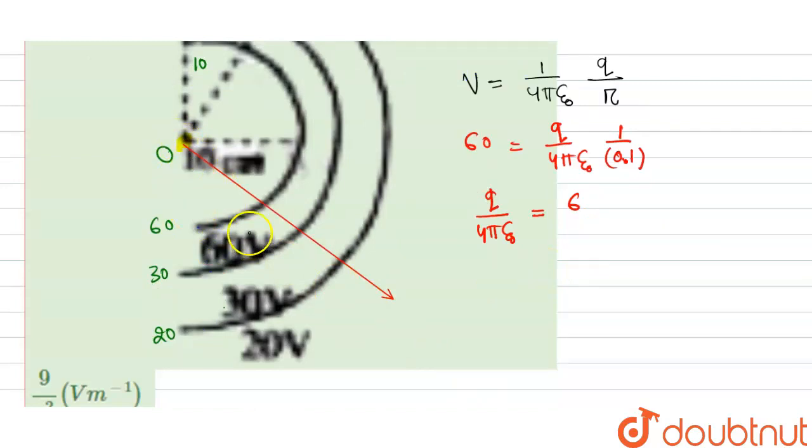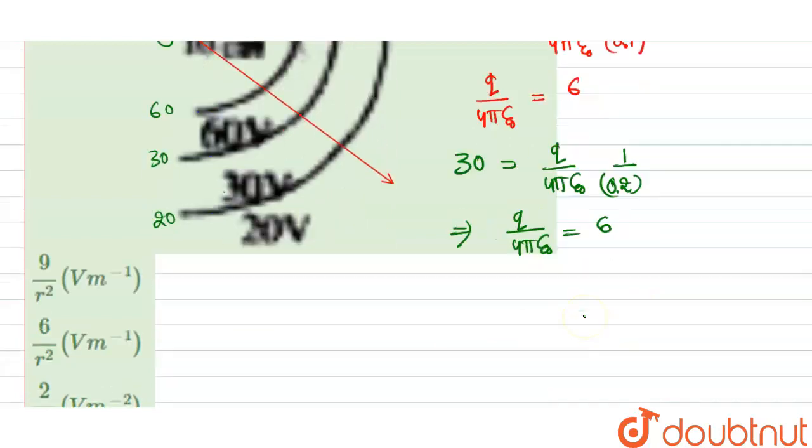Now considering the second circle, what you can get, that is the potential here is 30. This is 30 equal to similarly q divided by 4πε into 1 by, that is distance is here 20 centimeter, that is 20 centimeter we can take it 0.2 meter. So from here what you got, that is q divided by 4πε equal to 6. Why are you calculating this q by 4πε₀ term? Because